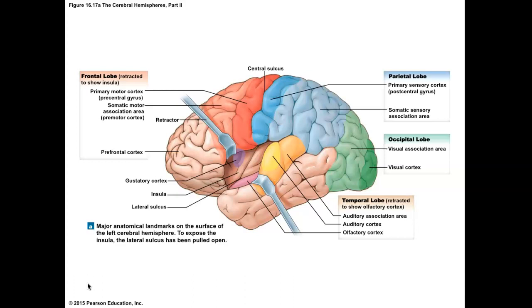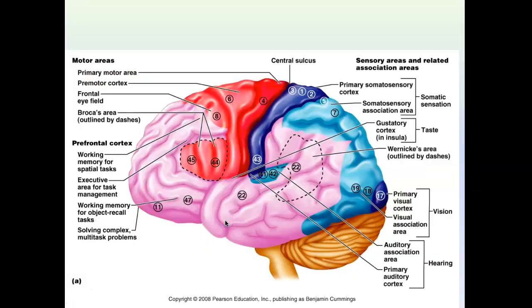The cerebrum has white and gray matter. The cerebral cortex is what you see when you look at the surface of the brain — it's the upper six layers and is all gray matter. Gray matter is unmyelinated, so it does not have the myelin sheath around it, and conduction is a little bit slower. Myelinated fibers make up the white areas of the brain, where conduction is faster.